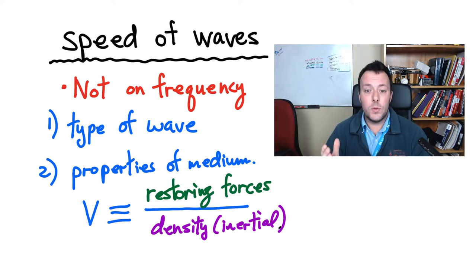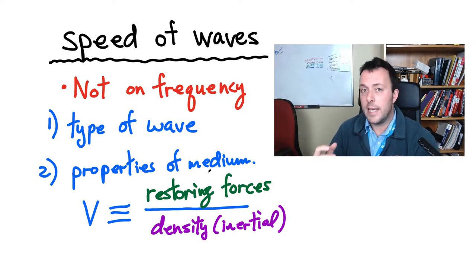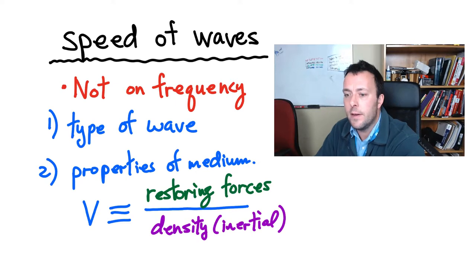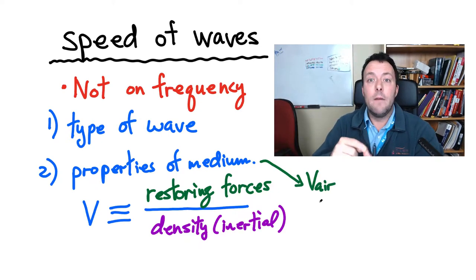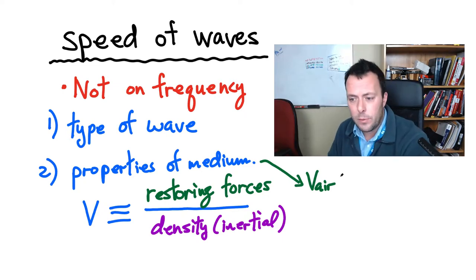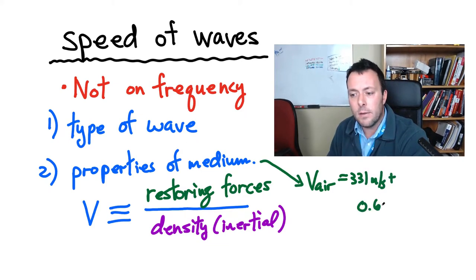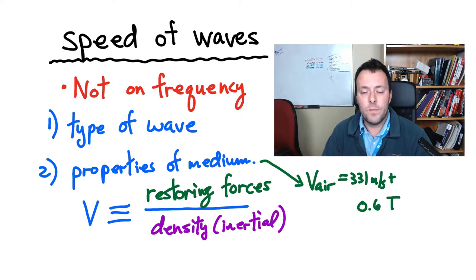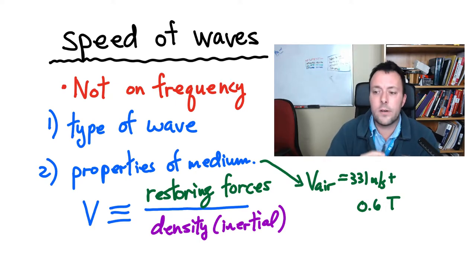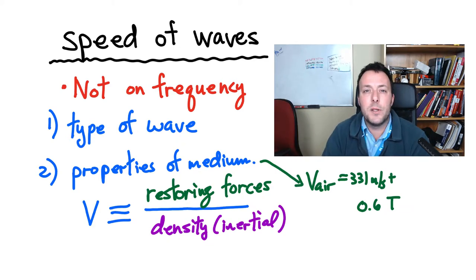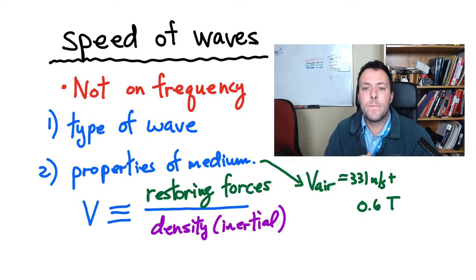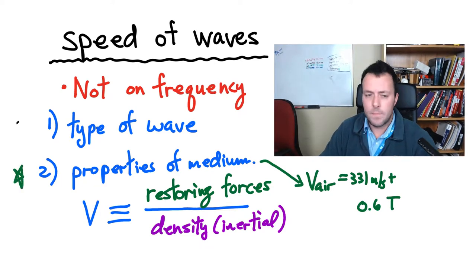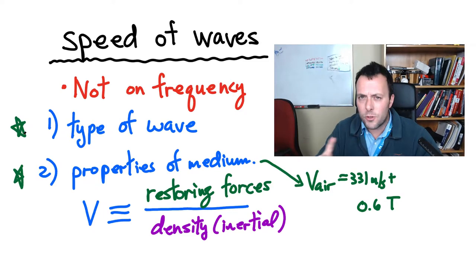The speed of sound in air depends on the properties of the air, including humidity and temperature. In dry air, the speed of sound is approximately 331 meters per second plus a temperature correction factor of 0.6T, where T is in degrees Celsius. At 20 degrees Celsius, you add about 12, giving approximately 340 meters per second. The hotter it is, the faster the speed of sound in that air. Remember: the speed depends on the properties of the medium and the type of wave — not on the frequency.